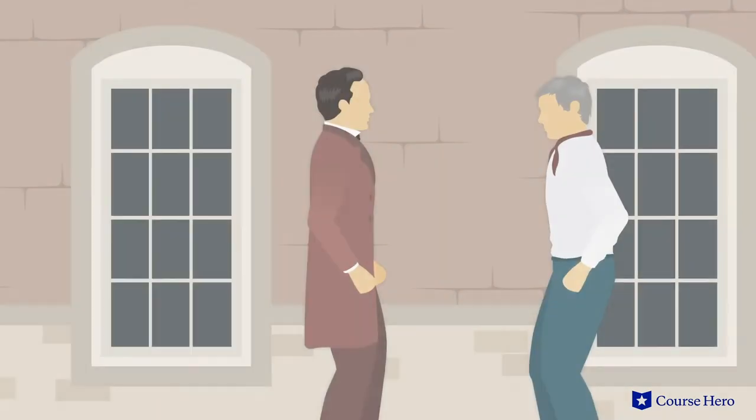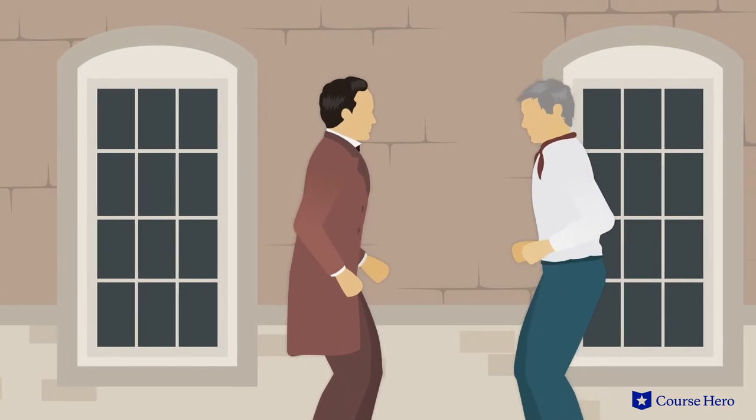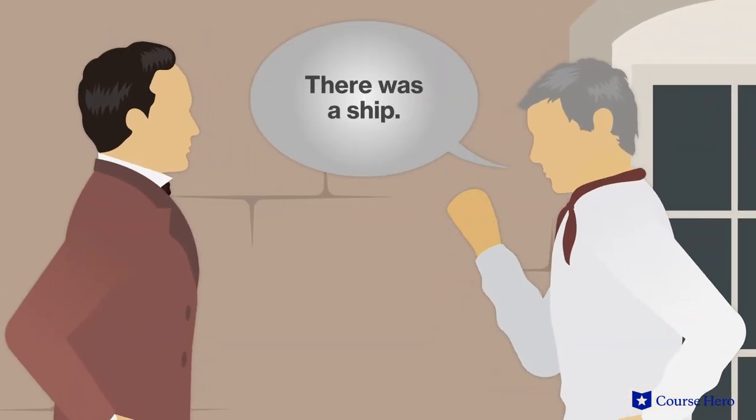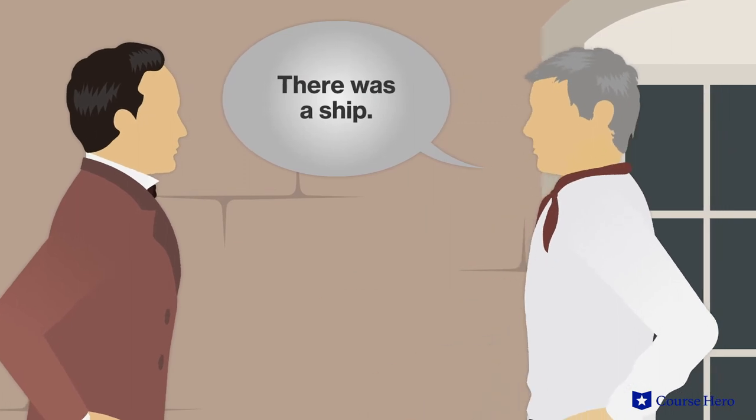The narrator sets up the frame story as the wedding guest is stopped by the mariner. Readers are launched immediately into the mariner's story with his line of, there was a ship, offering no introduction beyond that.